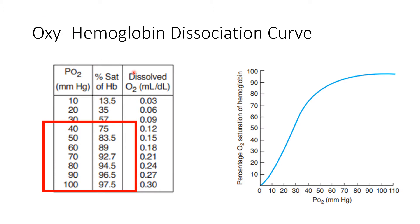So the oxyhemoglobin dissociation curve has the partial pressure of oxygen on the x-axis and the percentage saturation of hemoglobin with oxygen on the y-axis. Basically, it shows how with a change in partial pressure of oxygen, the hemoglobin saturation changes. If you see the shape of the curve, it is almost S-shaped — this is called the sigmoid shape.